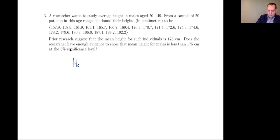Our null hypothesis is that the population mean μ is equal to 175. The alternative hypothesis is that the population mean is strictly less than 175. The only question is: do we have enough evidence to show that the mean height is less than 175?